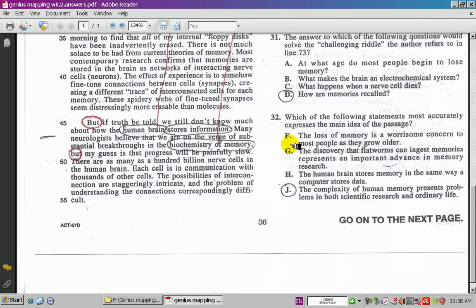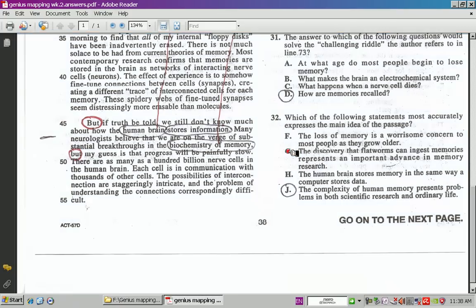Come over here. It says, the loss of memory is a worrisome concern to many people as they grow older. Well, kind of, but not really. That's not the central theme. G says, the discovery of flatworms and memory, flatworms, it's too narrow. Go ahead, cross that one out, and also cross out F. We're left with answer choice H, and we're left with J.